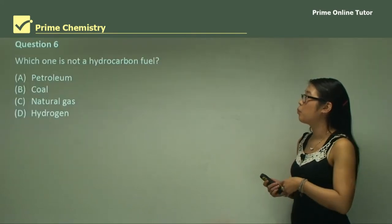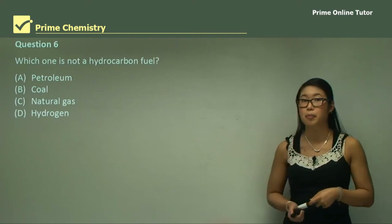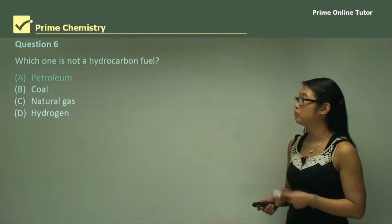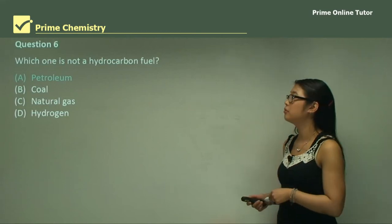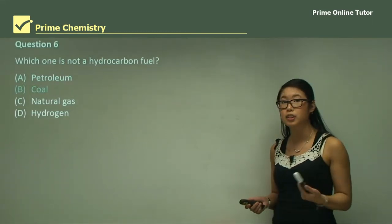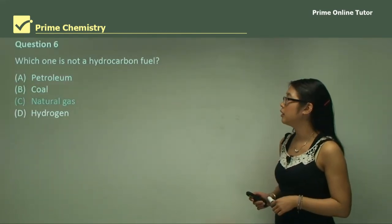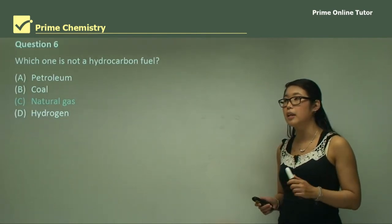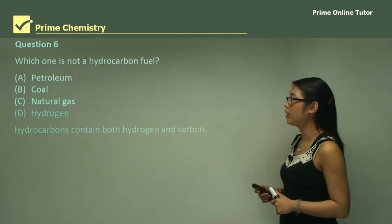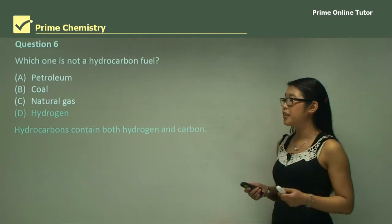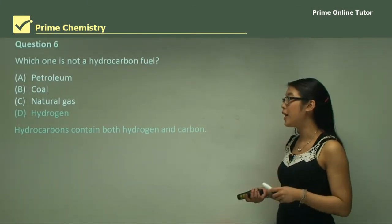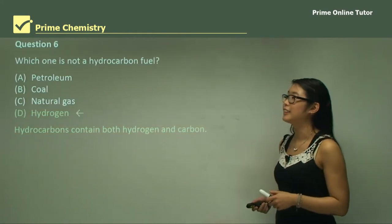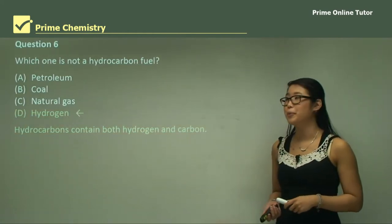Question six: which one is not a hydrocarbon fuel? Petroleum is a hydrocarbon fuel. Coal is another one — it's just a solid form. Natural gas is also a hydrocarbon as it has hydrogen and carbon in it. Hydrogen gas, however, has no carbon, so hydrocarbons must contain both hydrogen and carbon. Therefore D — hydrogen gas — is the correct answer.